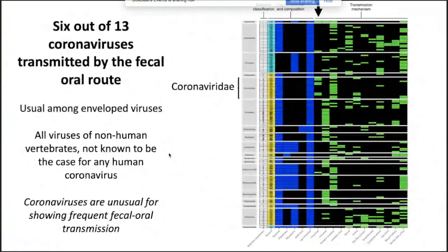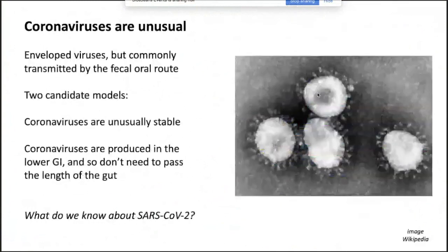But coronaviruses stood out as unusual. Here are coronaviruses among all lipid-envelope viruses. The structural feature shown is lipids, so we're looking at lipid-enclosed viruses, and the next column is fecal-oral transmission. You can see coronaviruses are actually commonly transmitted fecal-orally — not known to be the case in humans, but in six out of 13 animal coronavirus species. So coronaviruses are enveloped viruses, but commonly transmitted by the fecal-oral route.